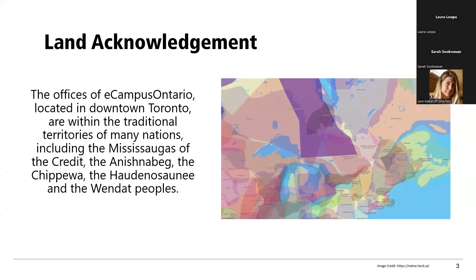We'd like to start the session with a land acknowledgement. The offices of eCampus Ontario, located in the downtown Toronto area, are within the traditional territories of many nations, including the Mississaugas of the Credit, the Anishinaabe, the Chippewa, the Haudenosaunee, and the Wendat peoples. We acknowledge and thank the diverse Indigenous people whose footsteps have, currently do, and will continue to mark this territory. We also ask that you consider the caretakers of the lands and waters on which you are situated.